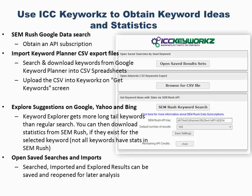However, SEMrush does not provide global search data, and for that we recommend importing keyword planner CSV export files. Go to google.com/adwords in your browser, log into Google, and use the keyword planner to search for your keywords. You can download up to around 800 keywords at a time into a CSV file, and then upload those CSV files right into Keyworks on the get keyword screen — just browse to the file, select it, and it will be imported.